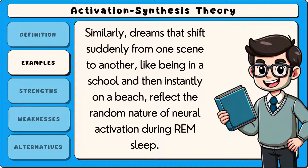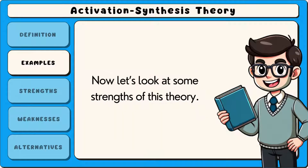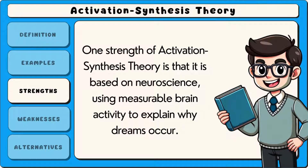Similarly, dreams that shift suddenly from one scene to another — like being in a school and then instantly on a beach — reflect the random nature of neural activation during REM sleep. Now let's look at some strengths of this theory. One strength of activation synthesis theory is that it is based on neuroscience, using measurable brain activity to explain why dreams occur.